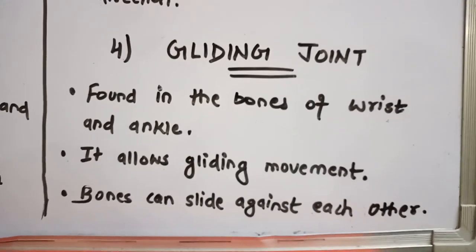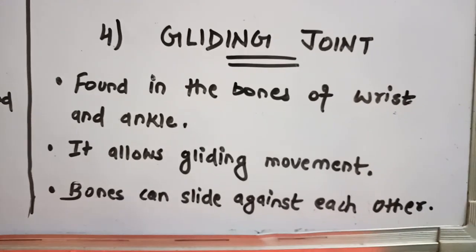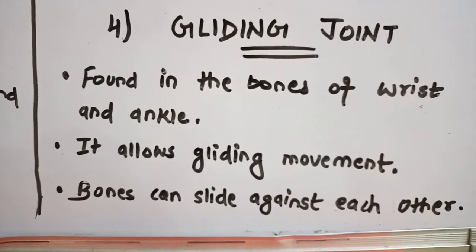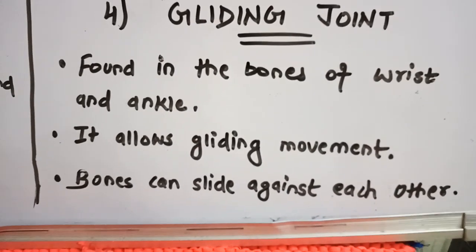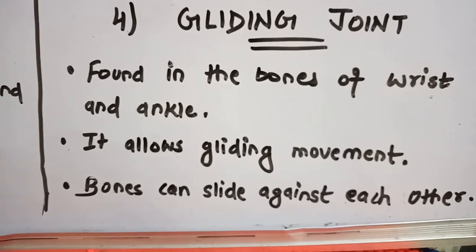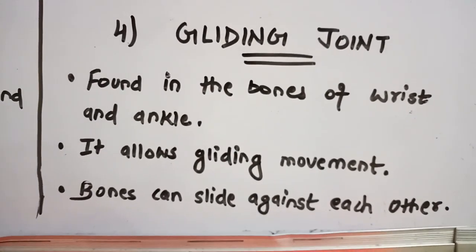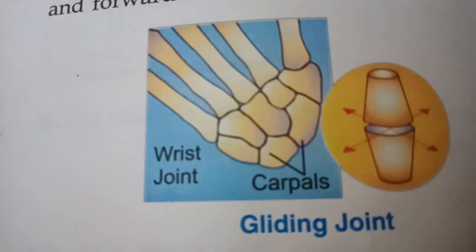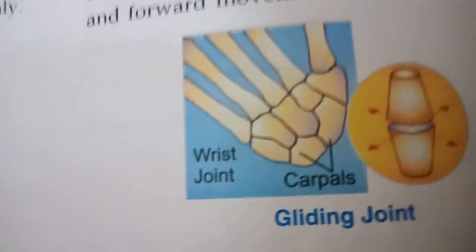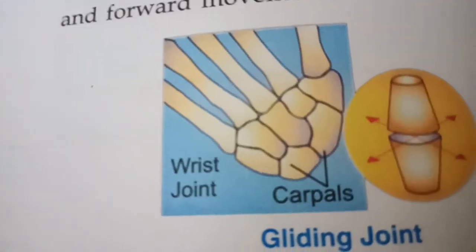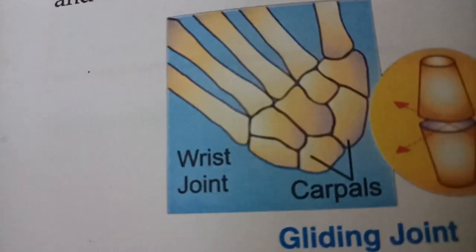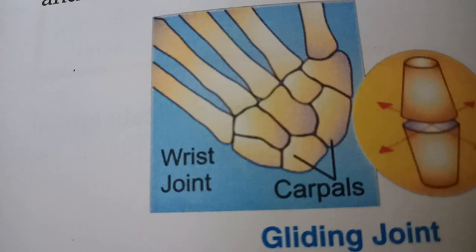The last type is the gliding joint. These joints are mainly found in the bones of the wrist and ankle. It allows gliding movement — basically a very smooth type of movement where bones can slide against each other. Our wrist and ankle move because of the gliding joint. You can see the movement of an ankle and how the gliding joint works.